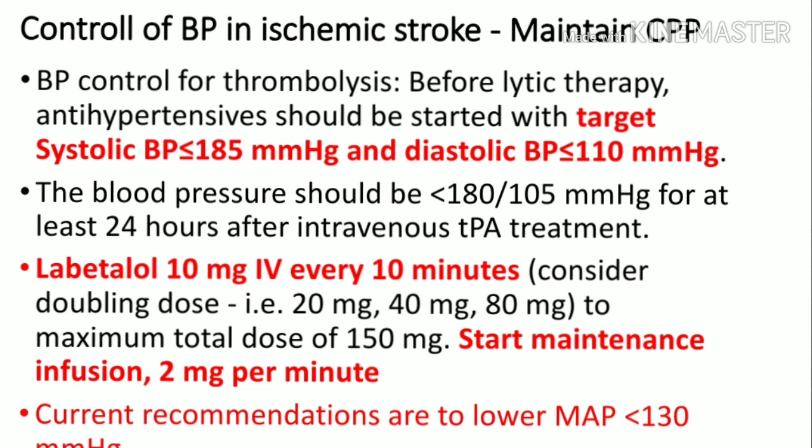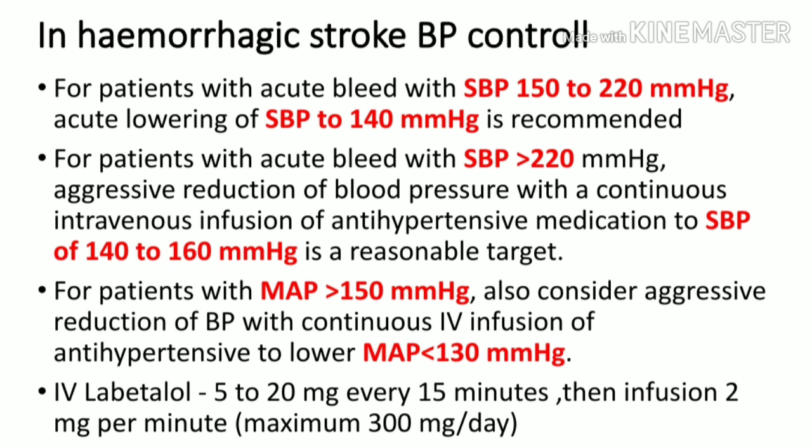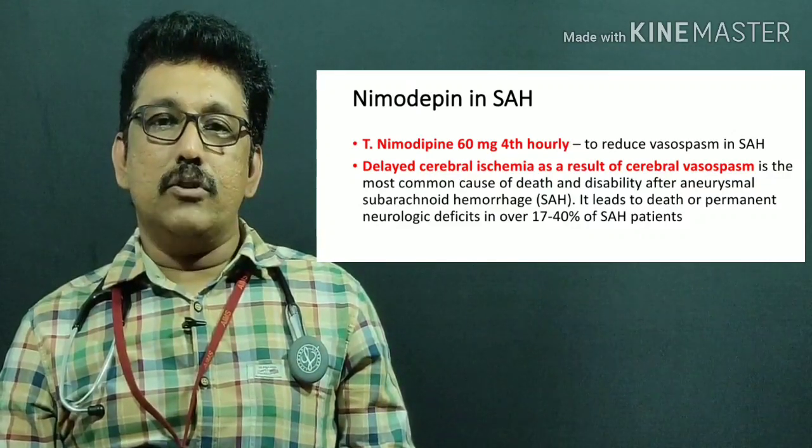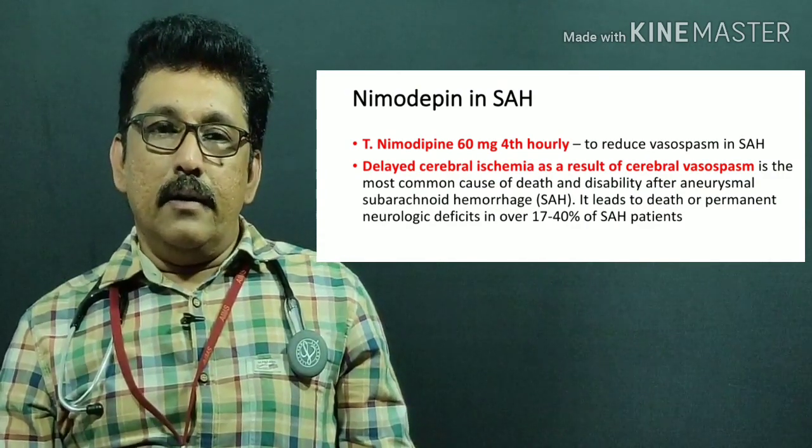In hemorrhagic stroke, the BP strategy differs slightly. If systolic BP is 150–200 mmHg, reduce it to 140 mmHg. If systolic BP is above 220 mmHg, reduce to 140–160 mmHg. Target mean arterial pressure less than 130 mmHg. Labetalol remains the drug of choice at 10 mg every 10 minutes followed by 2 mg/minute infusion. Nimodipine 60 mg every four hours should be started in all patients with subarachnoid hemorrhage to reduce vasospasm.